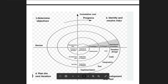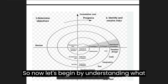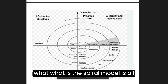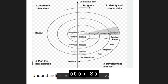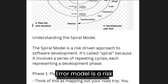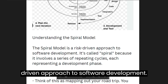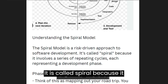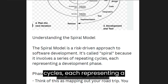Let's begin by understanding what the spiral model is all about. The spiral model is a risk-driven approach to software development. It is called spiral because it involves a series of repeating cycles, each representing a development phase.